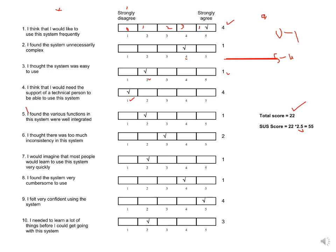For odd questions, the mapping is the same: a selected value of 1 means 0, 2 means 1, 3 means 2, 4 means 3, and 5 means 4. This is how to calculate the score.